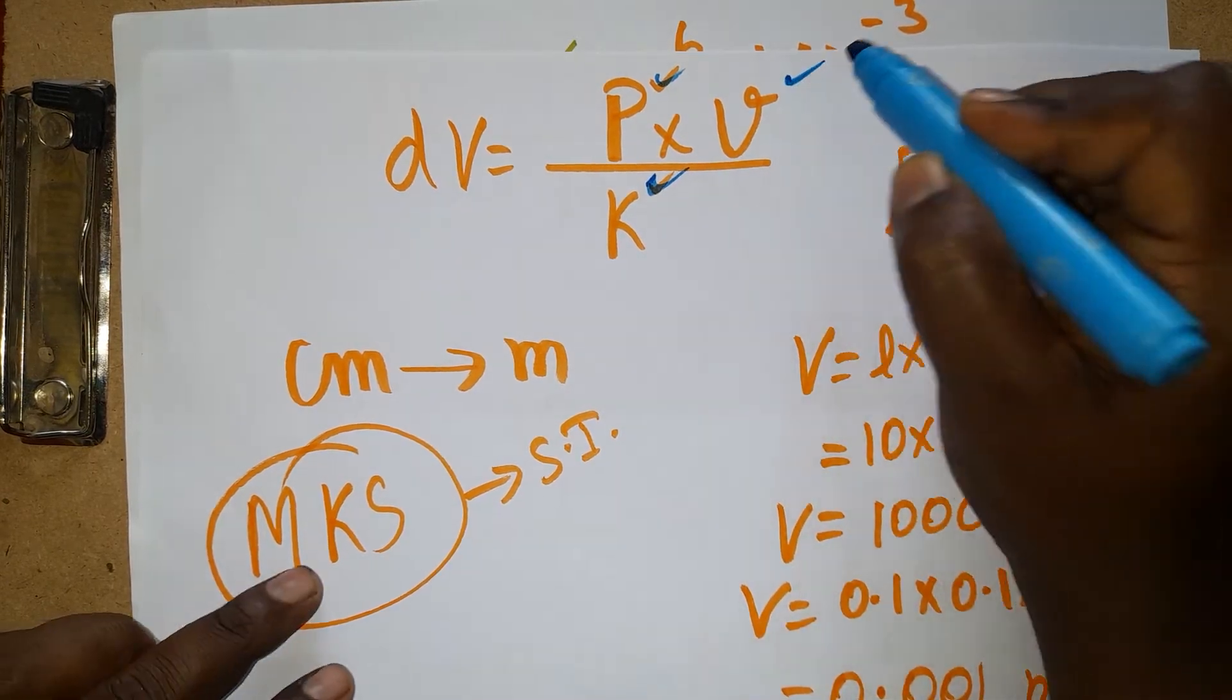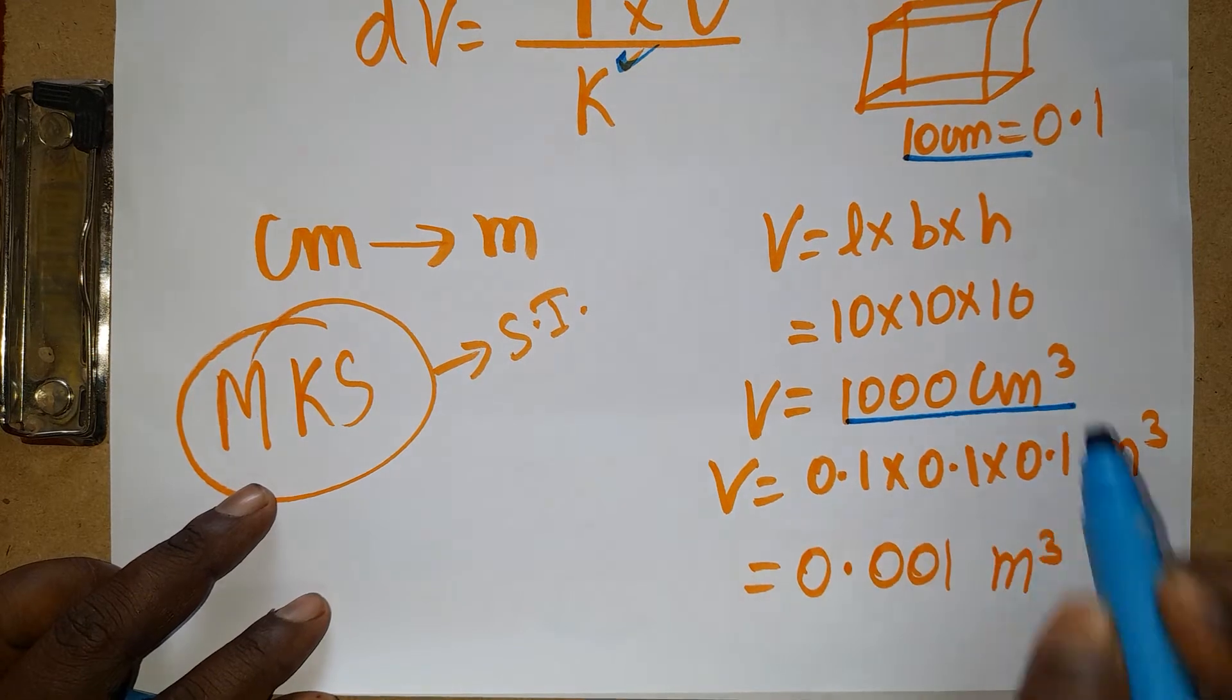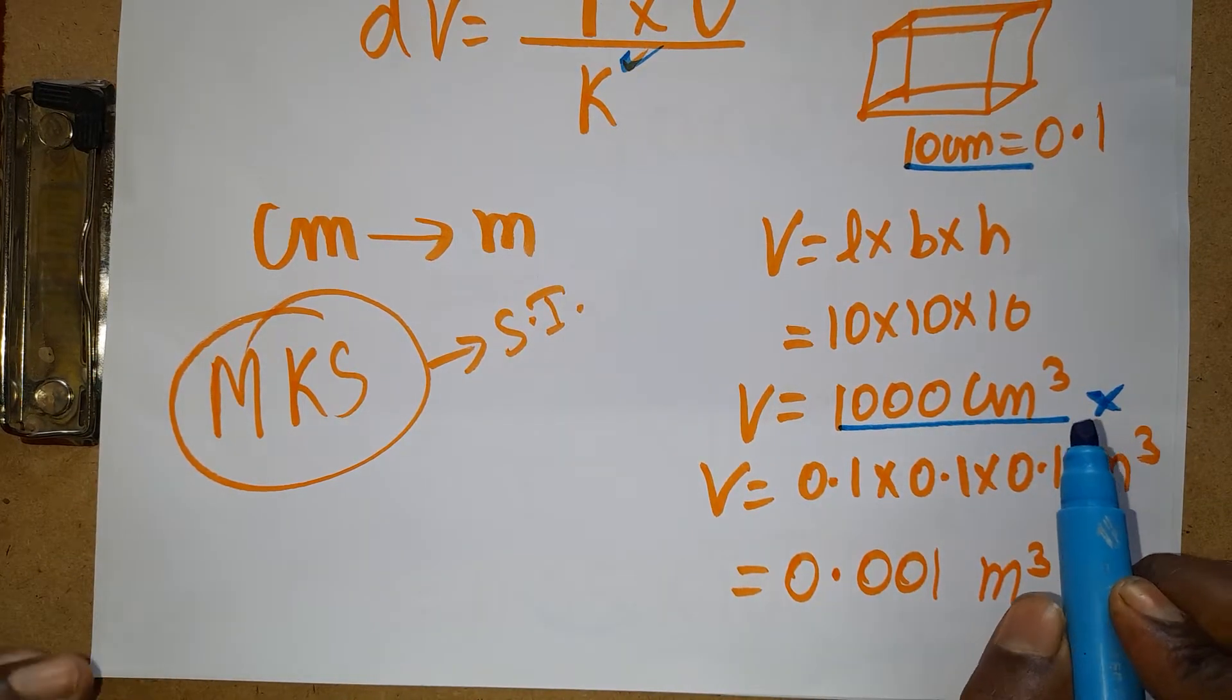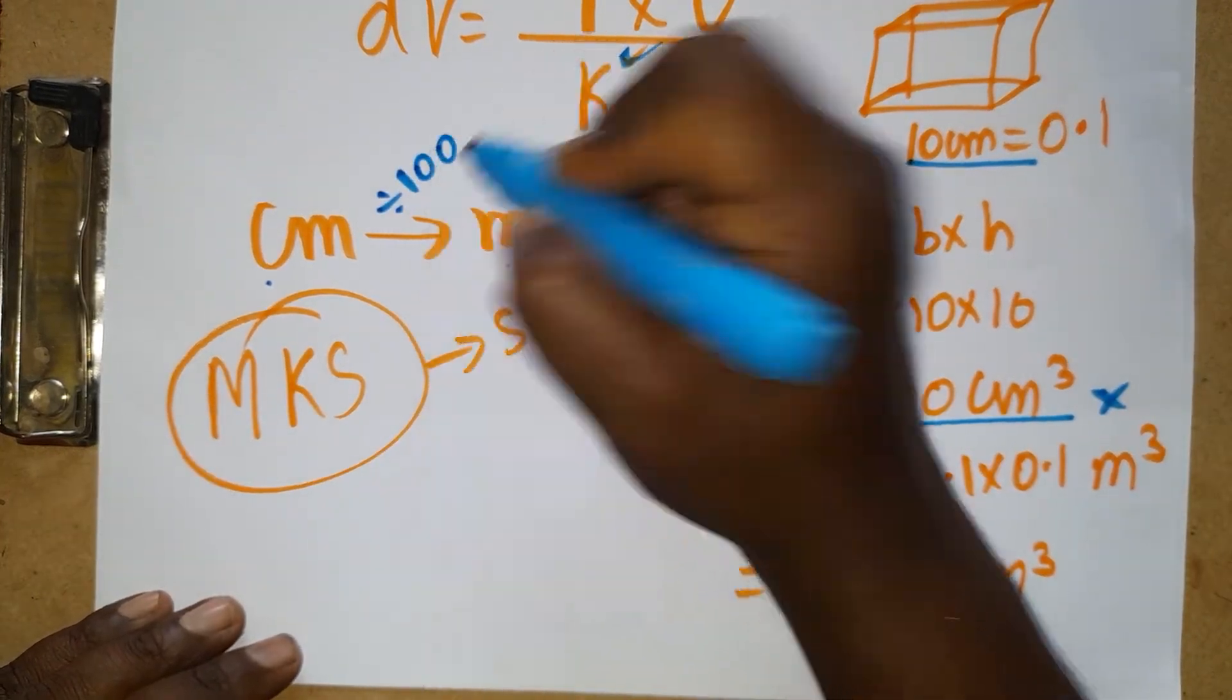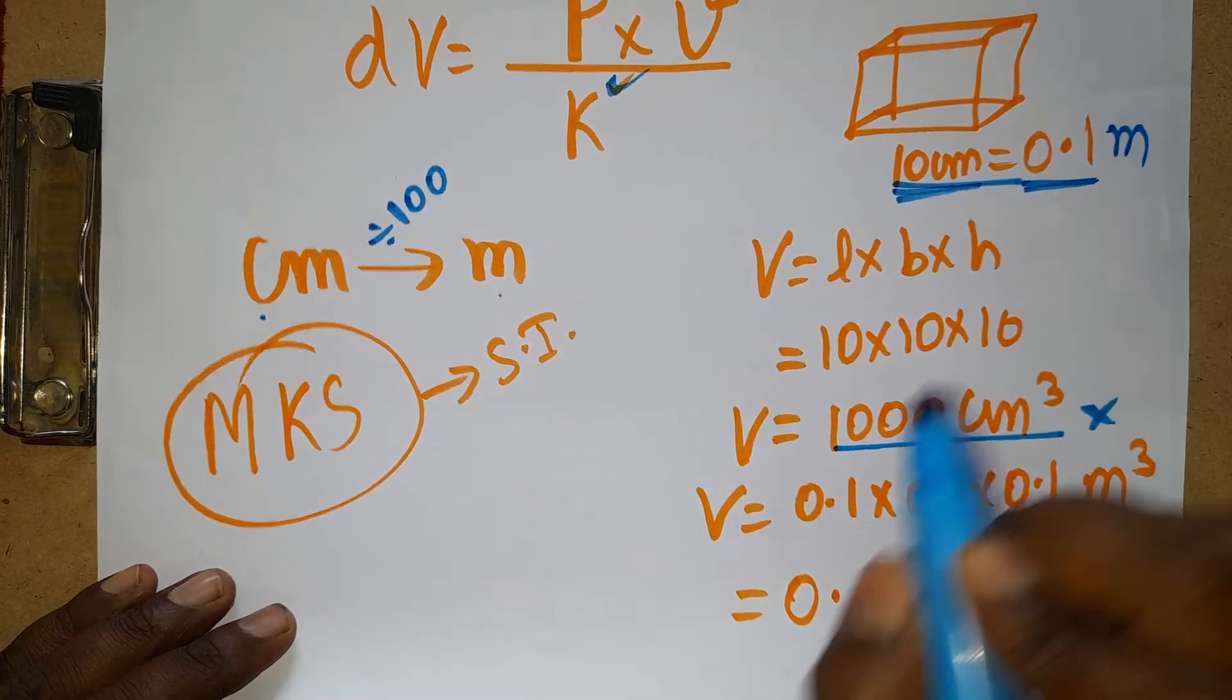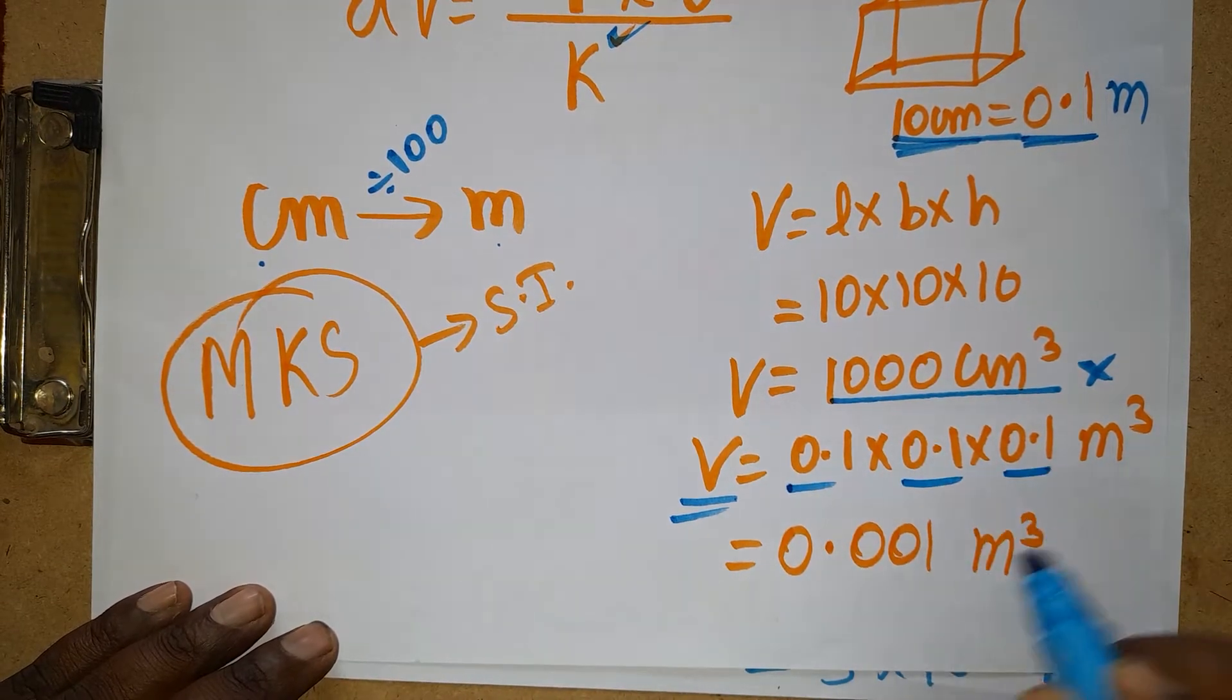P is pressure given, K is given. Now volume of the cuboid: if you have taken centimeter cube, you are not able to do the problem. You should do the problem with meter cube. Centimeter to meter, divide by 100. So 10 centimeters is 0.1 meter. Volume in meter cube: length × breadth × height = 0.001 meter cube.